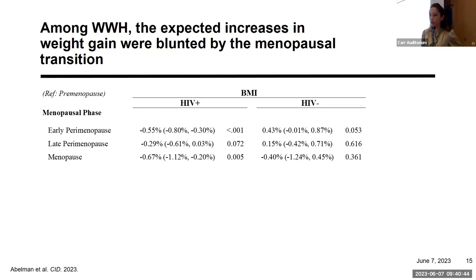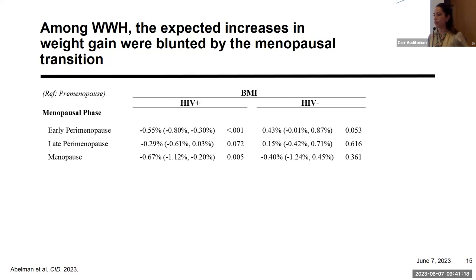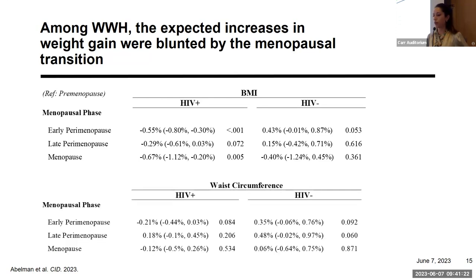This table presents results in numerical form, showing rates of change. Looking at percent increase — for example, in early perimenopause with premenopause as the reference — the number indicates the estimated percent increase in BMI per year was lower by 0.55 during early perimenopause than it would be at the same age if the woman were still premenopausal. Women with HIV had BMI trajectories mostly in the negative direction, whereas women without HIV had trajectories primarily in the positive direction, although these didn't reach statistical significance. Similar trends were observed for waist circumference.